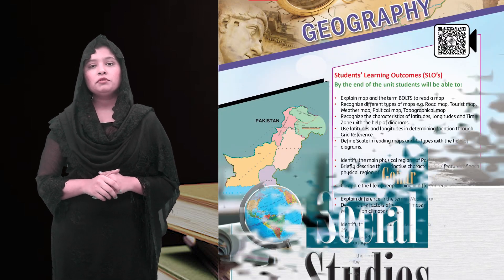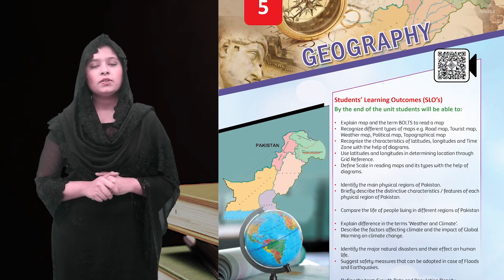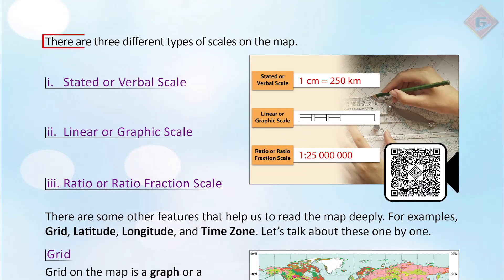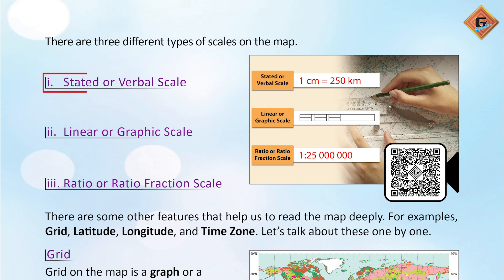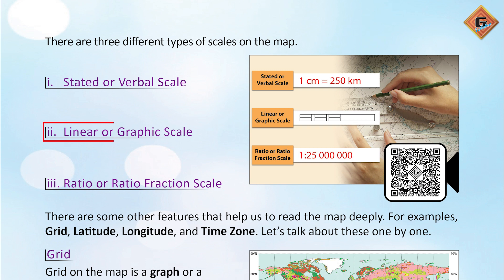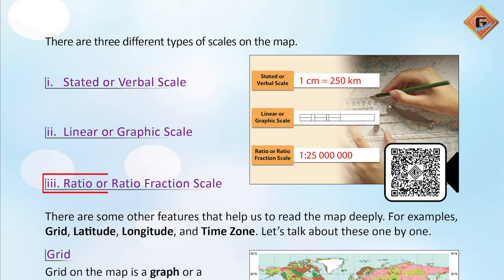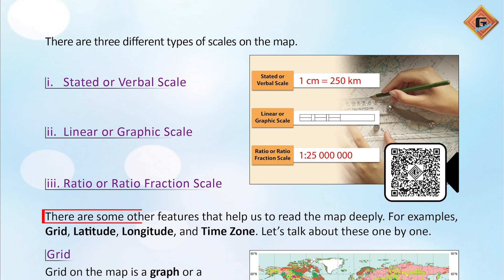There are three different types of scale on the map: number one, stated or verbal scale; number two, linear or graphic scale; number three, ratio or representative fraction scale.